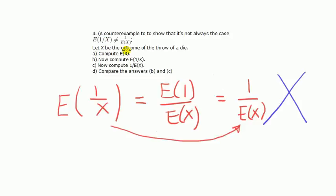Let x be the outcome of the throw of a die. A. Compute the expectation of x. B. Now compute the expected value of 1 over x. C. Compute 1 over the expected value of x. And then compare the results from B and C.